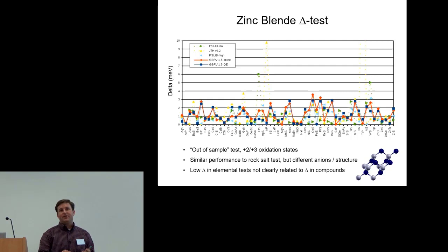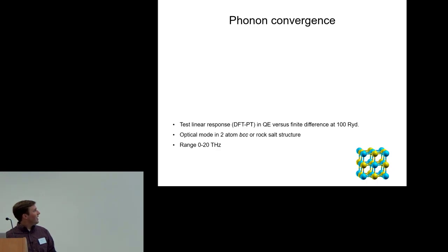I also did some work on trying to improve the convergence of the pseudo potentials with the quantum espresso linear response code. What I'm doing here is testing the DFPT, the linear response perturbation theory code, versus a finite difference calculation at very high cutoff. The two systems I tested are the optical mode of a BCC conventional unit cell, two atom unit cell, or a rock salt structure.